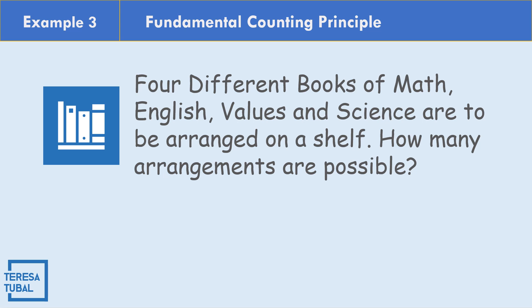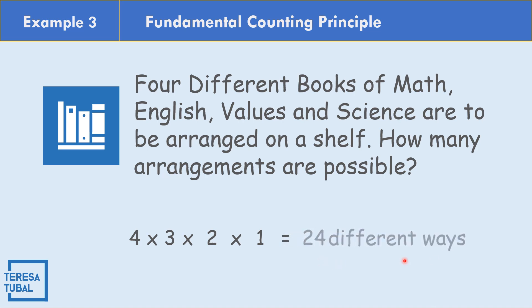For number three, four different books — Math, English, Values, and Science — are to be arranged on a shelf. How many arrangements are possible? We have four books, so for the first slot we have four choices; once one is placed, three choices remain for the second slot; then two for the third; and one for the last. So 4 × 3 × 2 × 1 = 24 different arrangements.